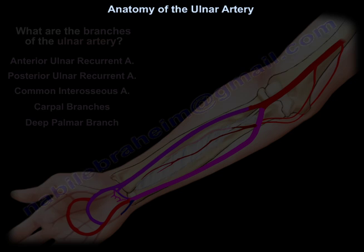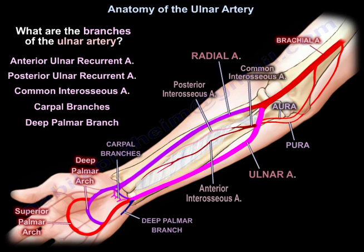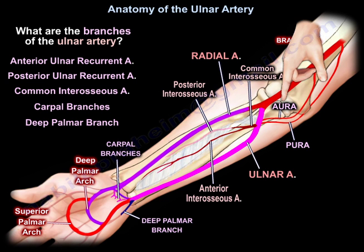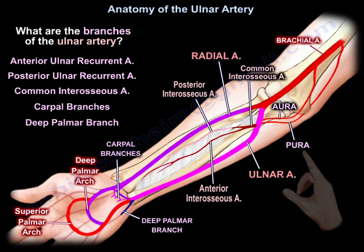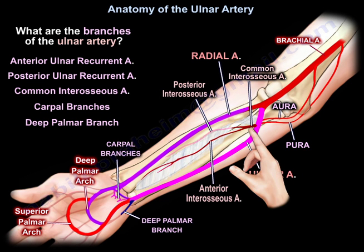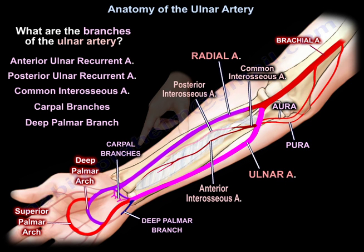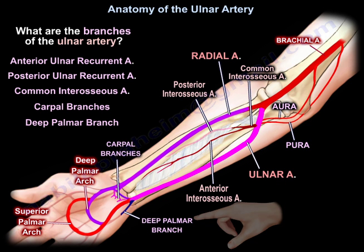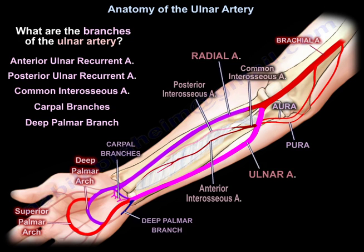What are the branches of the ulnar artery? Anterior ulnar recurrent artery, posterior ulnar recurrent artery, common interosseous artery, carpal branches, and deep palmar branch.